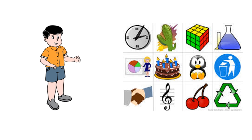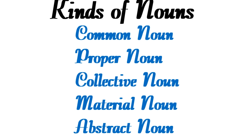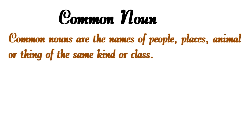There are many things around us, and in order to understand them, we classify nouns. Let's learn the kinds of noun. The kinds of noun are: common noun, proper noun, collective noun, material noun, and abstract noun.